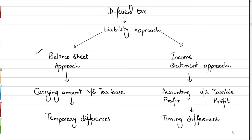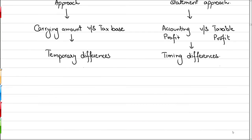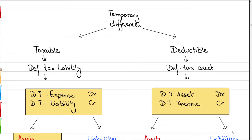We will be focusing on the carrying amount of assets and liabilities and the tax base of assets and liabilities. The temporary difference can be of two types: taxable differences, which lead to a deferred tax liability, and deductible differences, which lead to a deferred tax asset. Whether the difference is taxable or deductible determines whether the deferred tax is a liability or an asset.